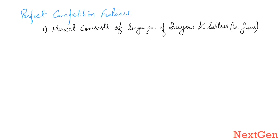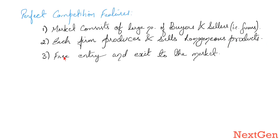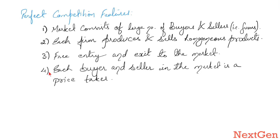The features of perfect competition: firstly, the market consists of a large number of buyers and sellers, where sellers are firms. Secondly, each firm produces and sells homogeneous products, that is similar products. The third feature is free entry and exit to the market — any firm can enter or exit from the market according to whether it's making profit or loss.